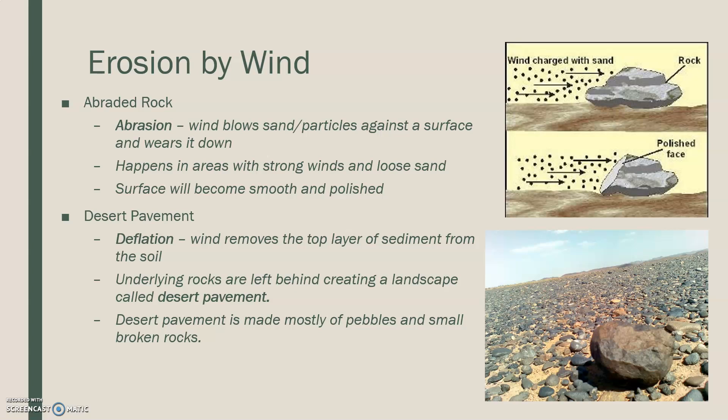In deserts, we have something called desert pavement, which includes deflation. Deflation is when wind removes the top layer of sediment from the soil. If you have wind and loose things on the ground — tiny leaves, pieces of sand, even snow or pollen — anything sitting on top of the ground can blow away. Deflation is the wind moving that layer completely away, leaving the underlying rocks behind.